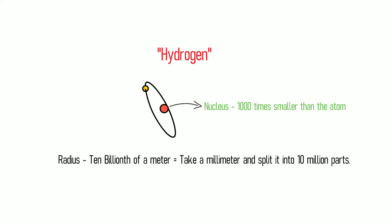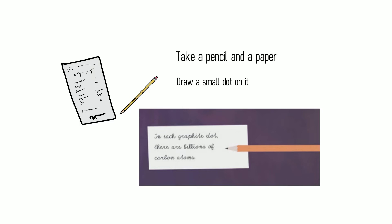To take the demonstration of the tininess of atoms a bit further, take a pencil and a piece of paper. Now draw a small dot on the paper. If you have done so, you have stained your paper with billions of carbon atoms.